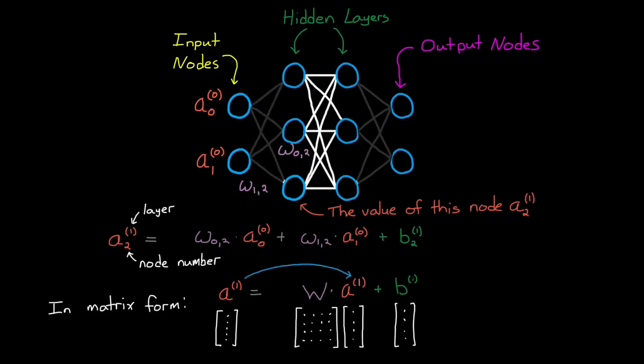Now if we calculated the values of the nodes simply like this, and then fed them as inputs into the next layer to perform the same type of linear operations, and then again to the output layer, you'll probably have a concern. How in the world could a bunch of linear equations act as a universal function approximator? Specifically, how could it represent a non-linear function? Well, that's because I left out a step, which is probably one of the most important aspects of an artificial neural network.